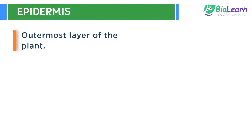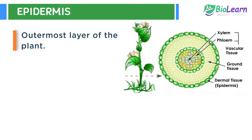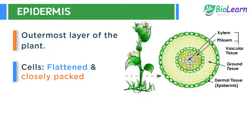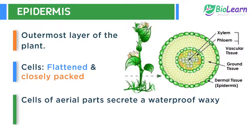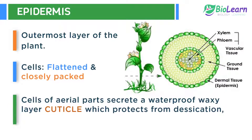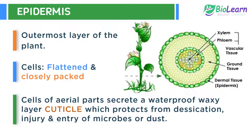Epidermis is the outermost layer of the plant made up of flattened and closely packed cells, which form a continuous layer. The epidermal cells secrete a waterproof, waxy layer known as cuticle, which covers the aerial parts of the plants. It prevents them from desiccation, mechanical injury, and entry of microbes and dust.